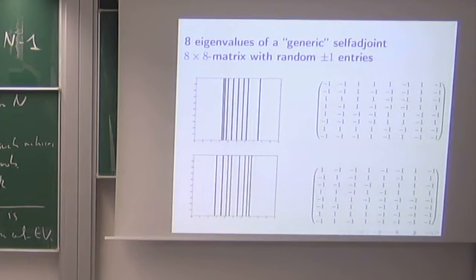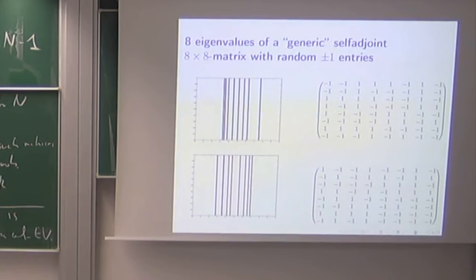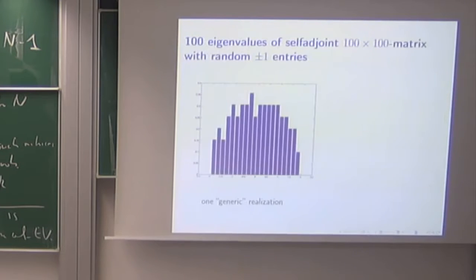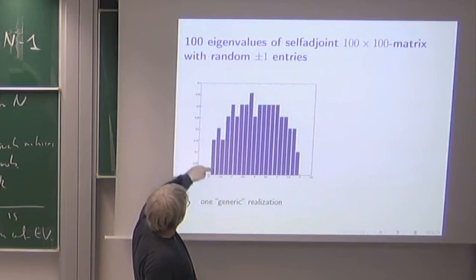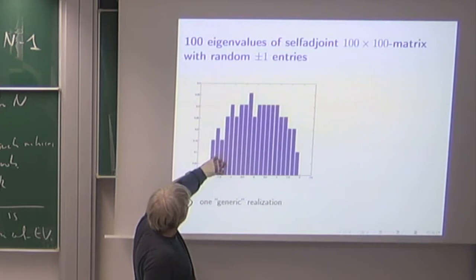Good, but the point is that if we are making n bigger then actually there will be more structure. Also namely here I have a 100 by 100 matrix and I'm looking on the hundred eigenvalues of this guy and I'm drawing the histogram. Then you see I'm getting something like this. This tells me I have a couple of eigenvalues sitting here, so many here and so many here.